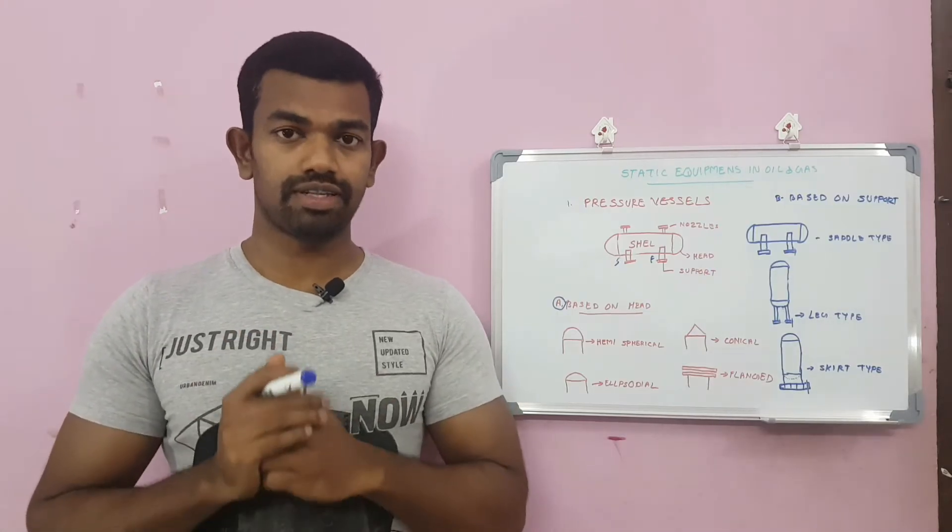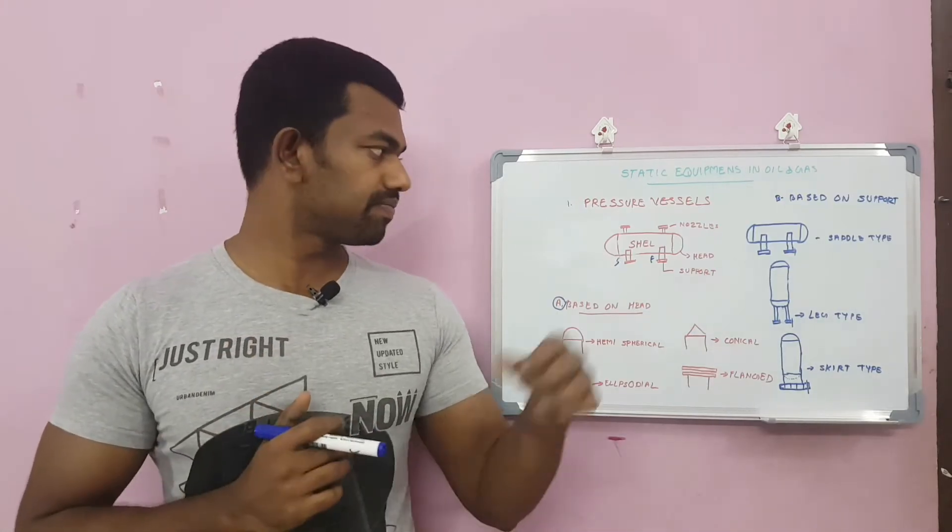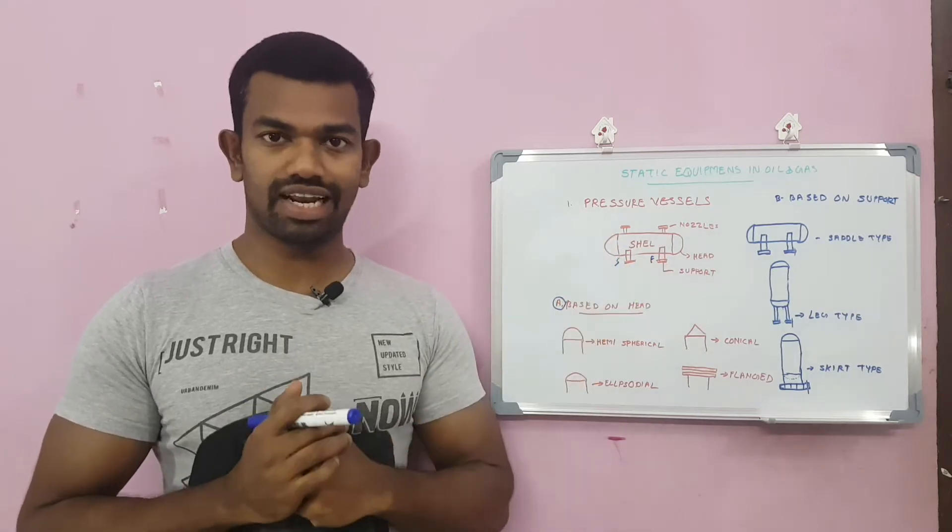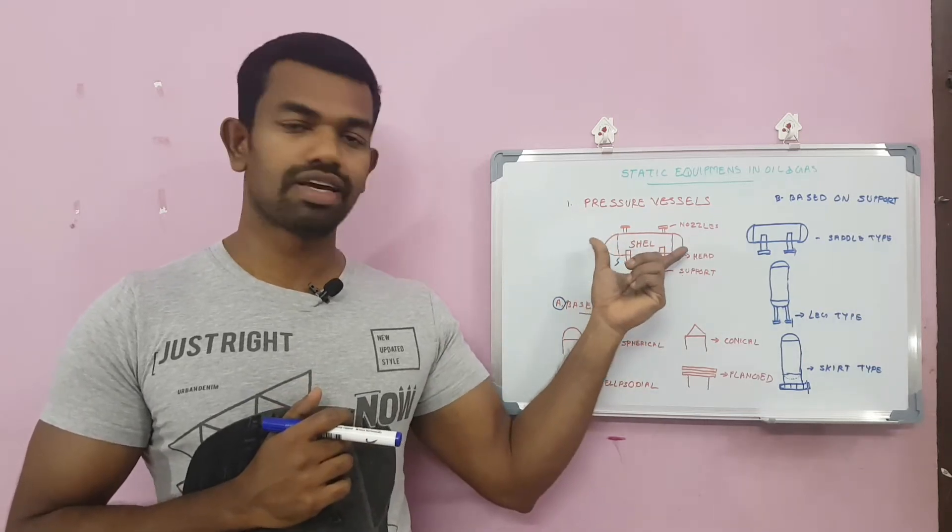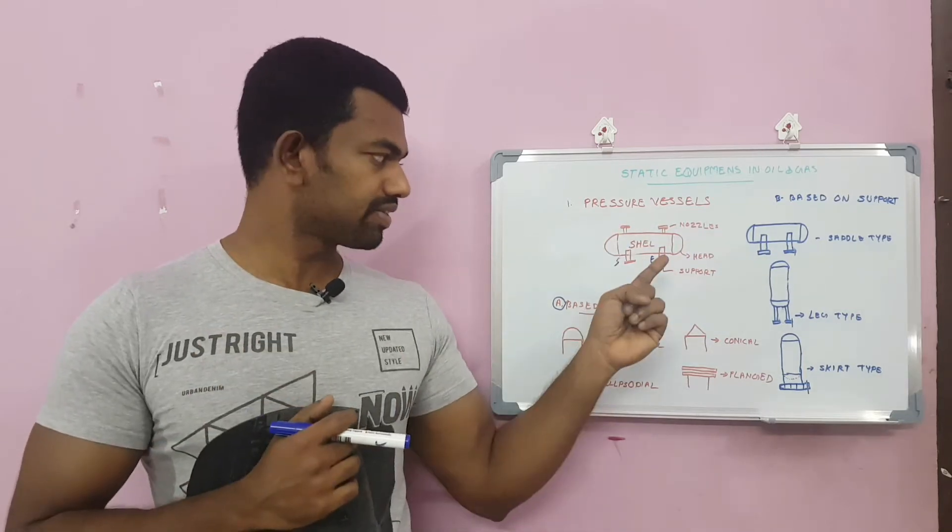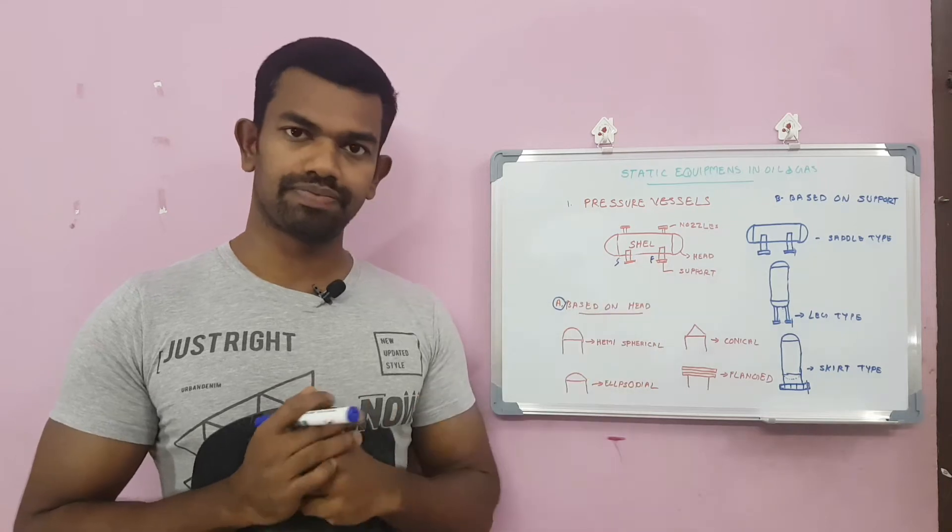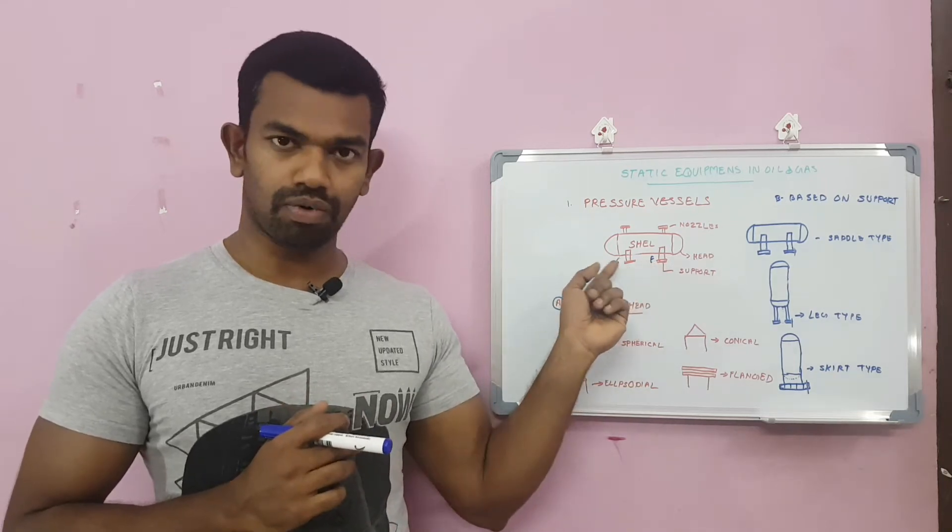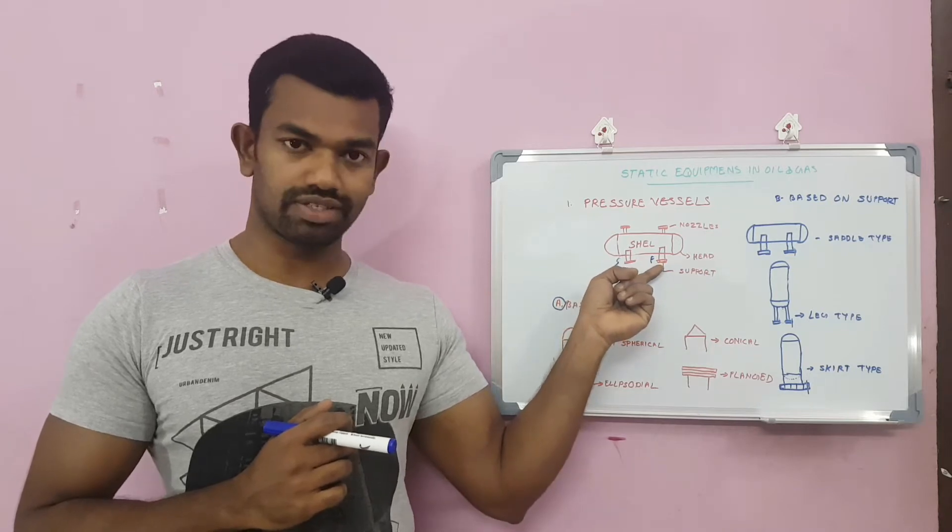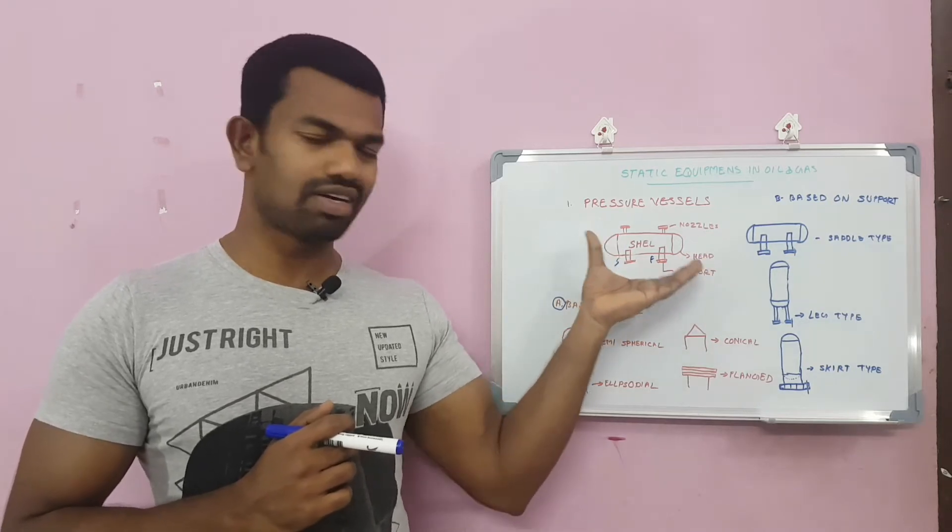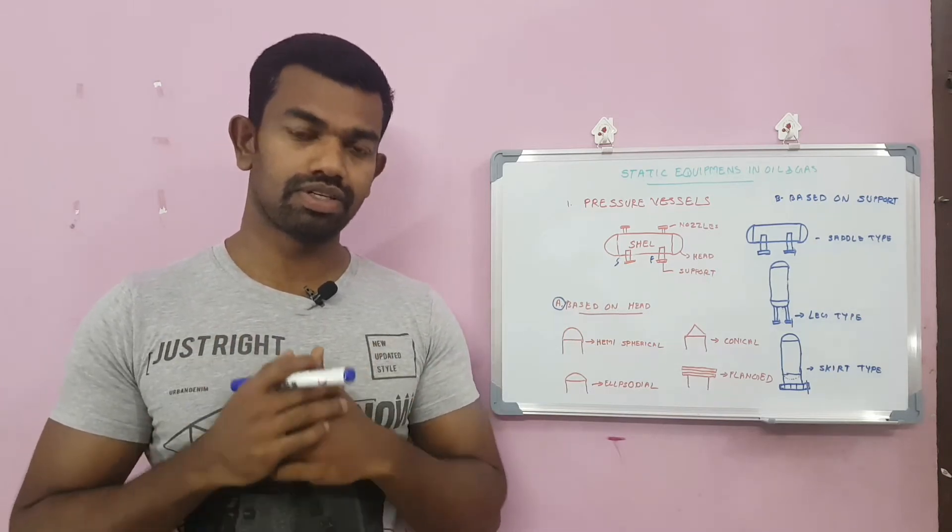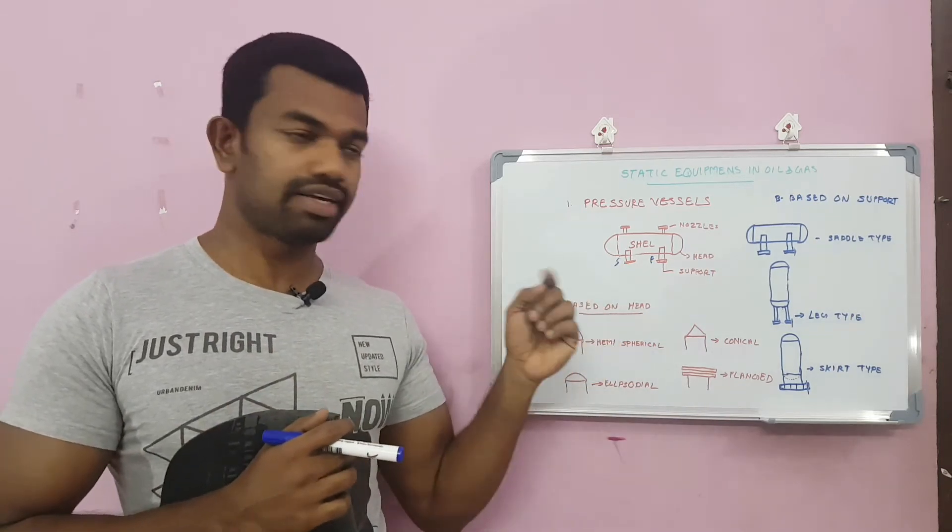Now let's see what are the parts of static equipments. Here you can see the main portion is shell. This end is head. These are nozzles. These are the supports. In these supports, one may be sliding, may be fixed. Now we can classify based on the head.